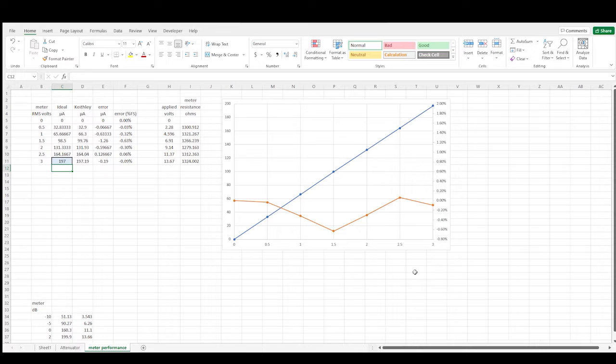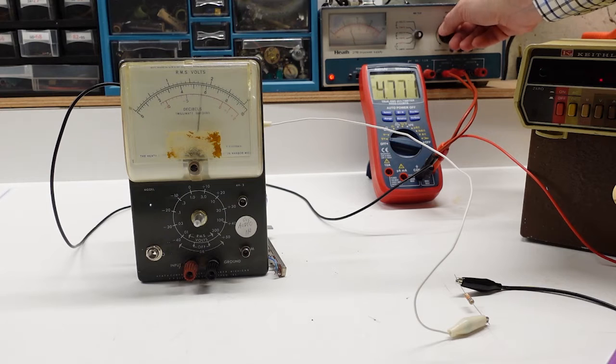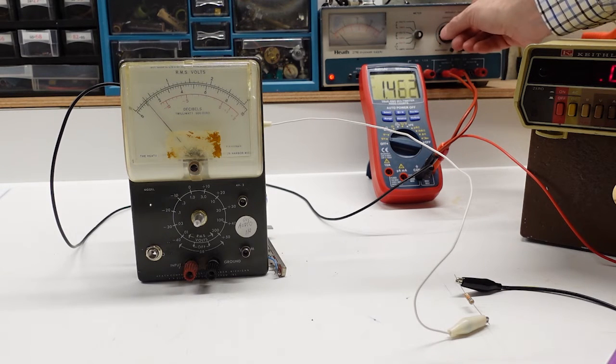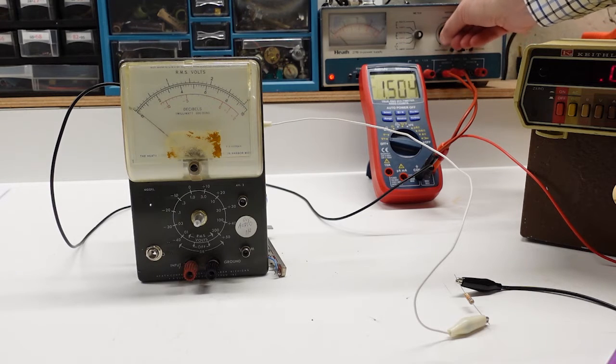So, all things considered, this Simpson meter is tracking plenty accurately enough for this application. The last check for the meter is to see how smoothly it moves. That's easy to do. Just vary the voltage and watch the needle for any sticking or hanging up. Looks like there's no sticking issues, so all in all, the meter looks to be in really good shape.